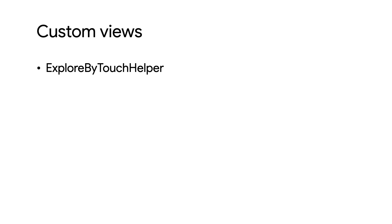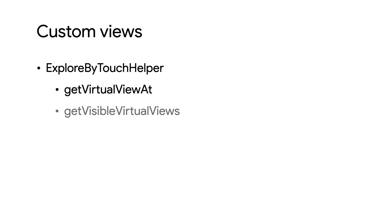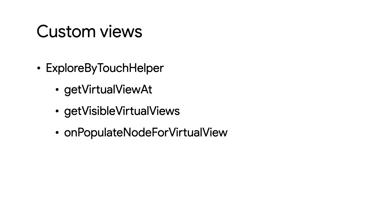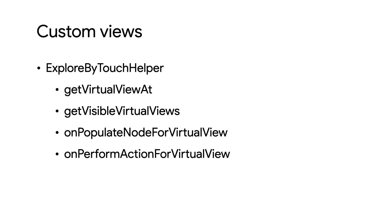It can feel like a lot of work to make custom views more accessible, but breaking it down into smaller pieces makes it less daunting. We've covered the four most important methods for ExploreByTouchHelper: getVirtualViewAt to return a virtual view ID for given coordinates; getVisibleVirtualViews to add the visible virtual view IDs to the passed list; onPopulateNodeForVirtualView to set the accessibility node info for a virtual view; and onPerformActionForVirtualView to respond to interactions with a virtual view. In addition, the sendAccessibilityEvent method is used to tell the system about changes, such as if you've changed the text in your custom view.